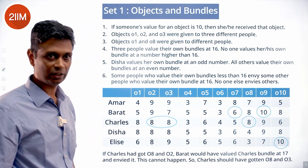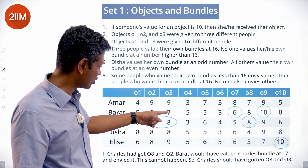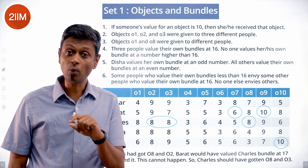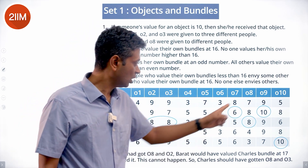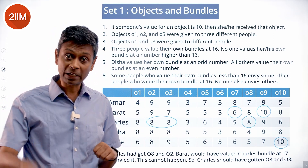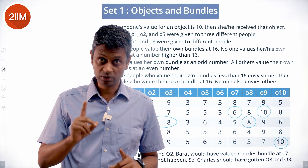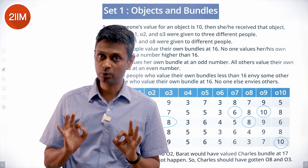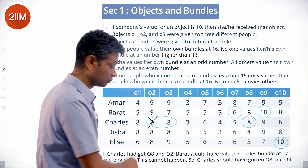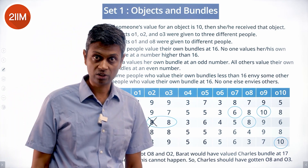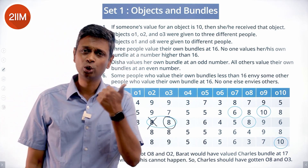Now let's look at Charles's value. Bharat has values of 9 and 7 for O2, and 8 for O8. So Bharat will value Charles's bundle at 8 plus 7 or 8 plus 9. If Bharat values Charles's bundle at 8 plus 9 = 17, Bharat will envy Charles — which is not possible because Bharat has got 16 and doesn't envy anyone with 16. That means Charles cannot have got O2. So Charles has got O3. That gives us 2 objects for Bharat and 2 for Charles.